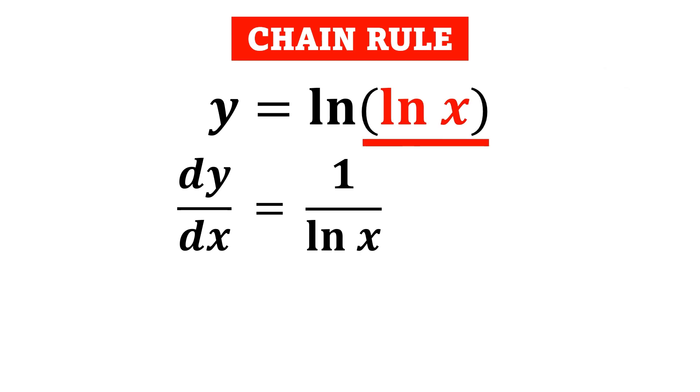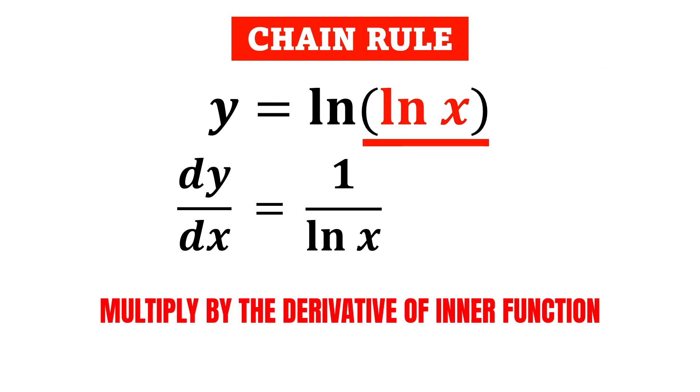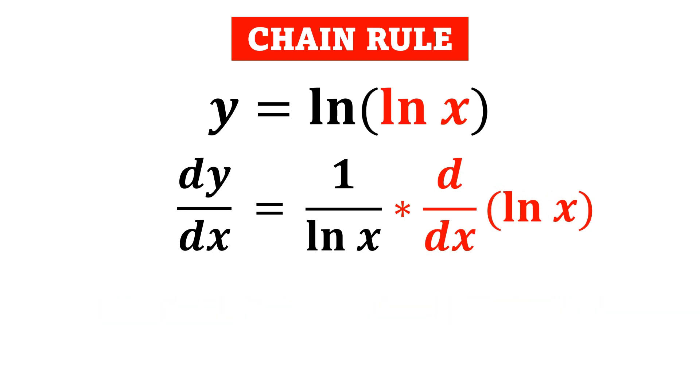According to the chain rule, we then multiply it by the derivative of the inner function. In this case, we multiply it by the derivative of ln x, in which we will be getting 1 over x.